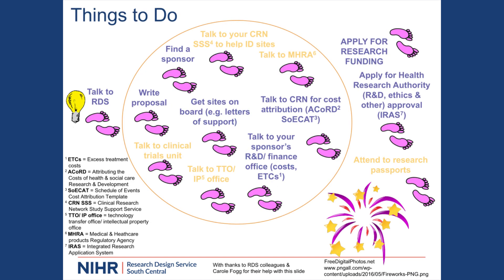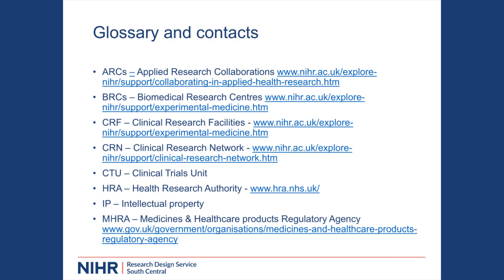This final slide tries to bring it all together. When preparing your proposal, talk to the RDS — we can't flag that enough. Talk to your Clinical Trials Unit, Technology Transfer Office, and CRN, and start discussing sites. Then find and agree a sponsor, do your costings, and once you apply for research funding, you can do your ethics and other approvals afterwards. There's a glossary and links to where you can find things online in your pack.